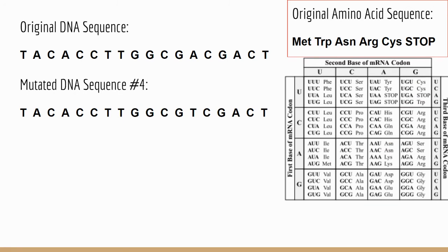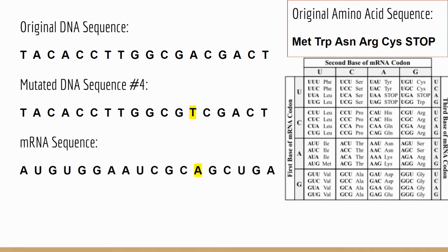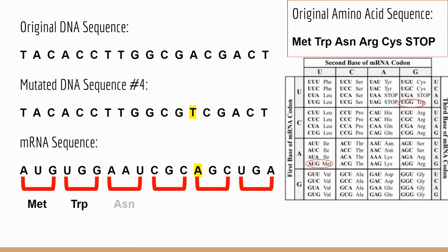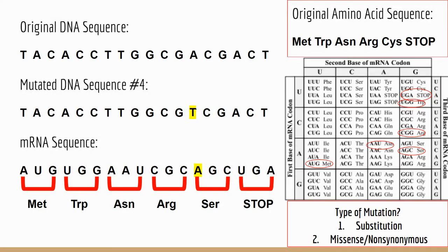Our final DNA sequence: we look and find the base that changed is this thymine right here — we only changed one base, so this is a substitution. Since adenine is a purine and thymine is a pyrimidine, we're changing versions of nucleotides, so this is a transversion. We transcribe to our mRNA sequence, add our reading frame, and start translating. This is our final amino acid sequence, and when we compare it against our original, we find that only one amino acid has changed where the mutation happened — a serine. So this is a substitution, but it's also a missense or non-synonymous mutation because it changed the amino acid added to the chain.